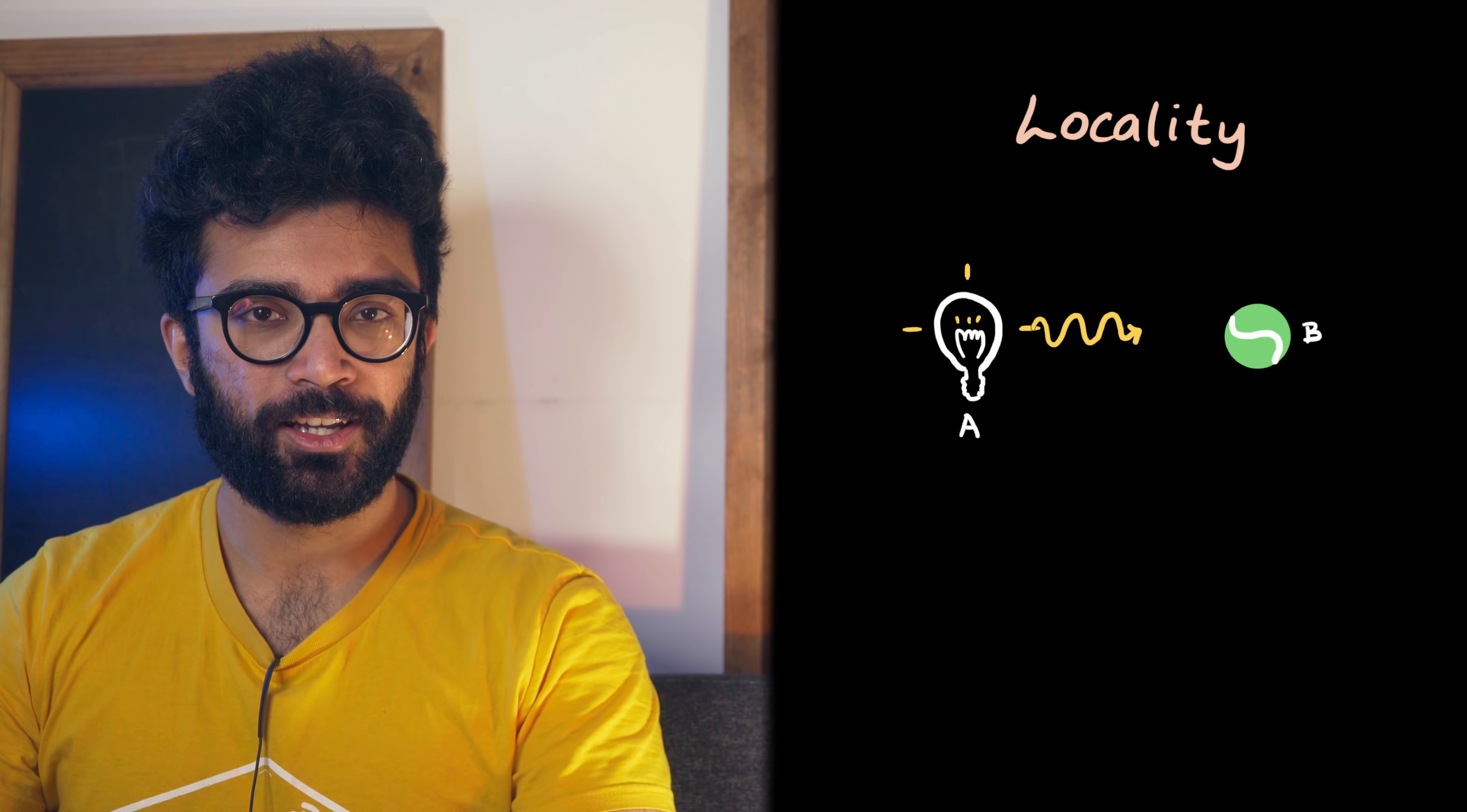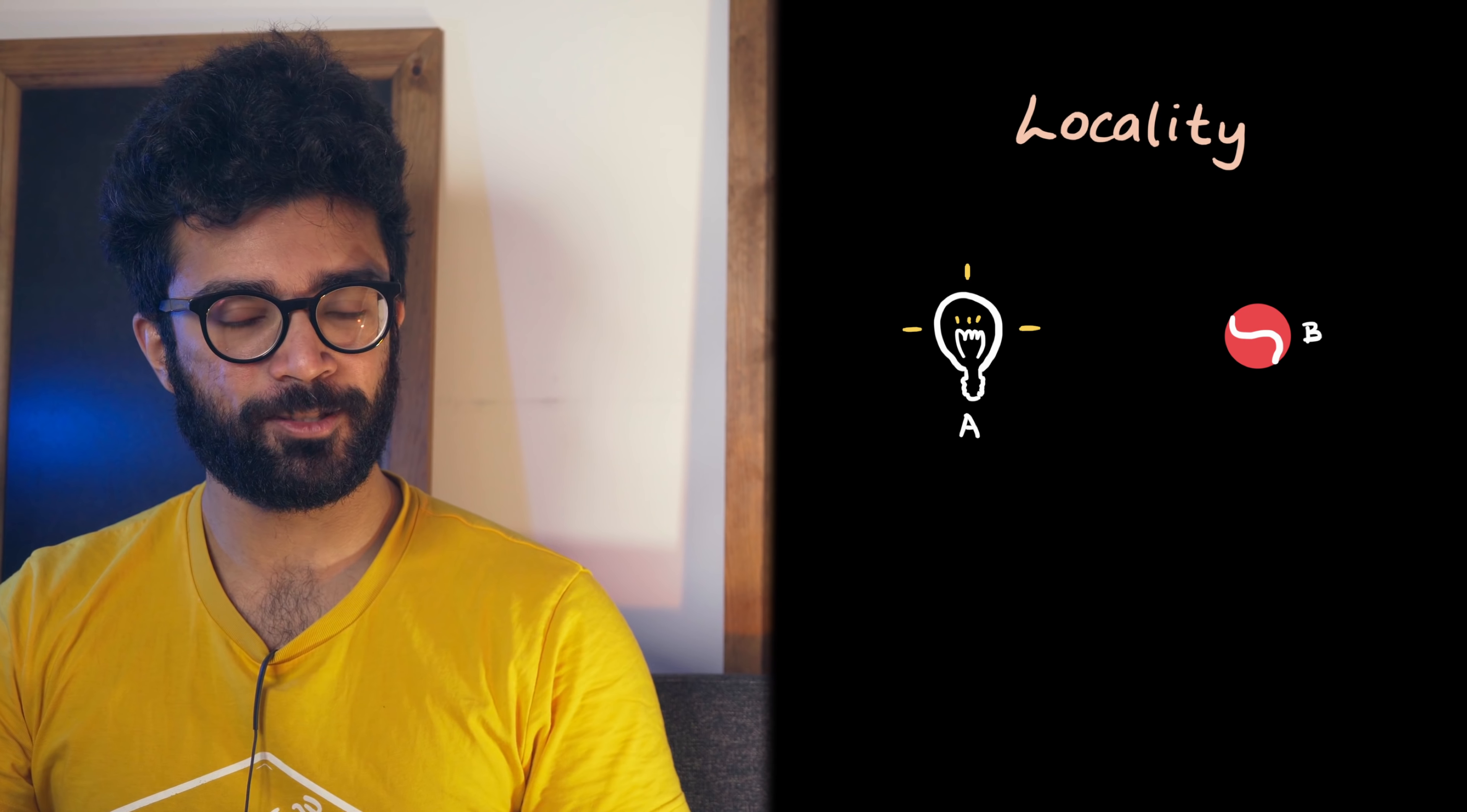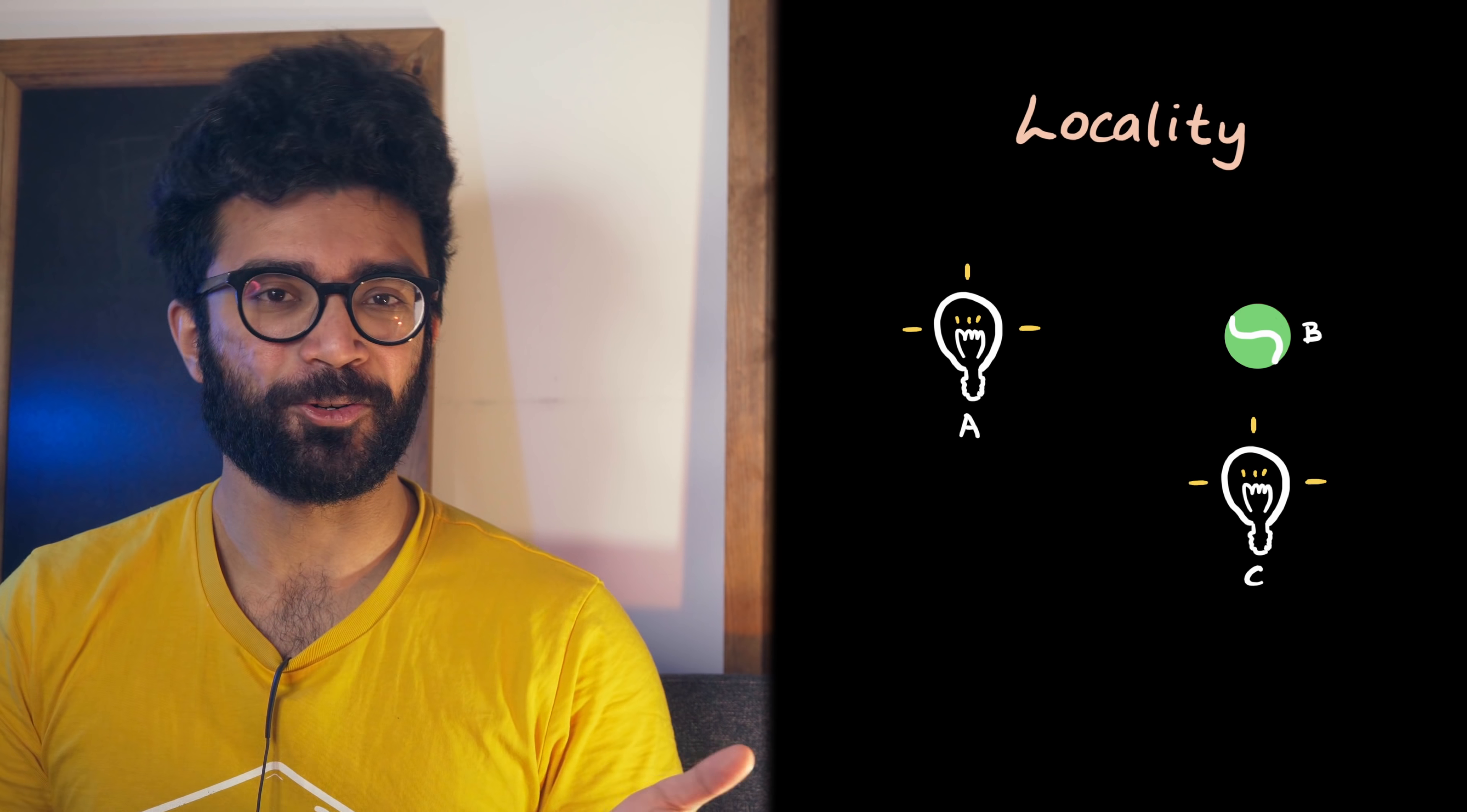If the ball changes color quicker than the light from the bulb can get to it, then one of two things is true. Either locality does not exist, things can be caused by other things quicker than we can send signals between the two things, or there was another light source nearer to the ball that caused the ball to change color.